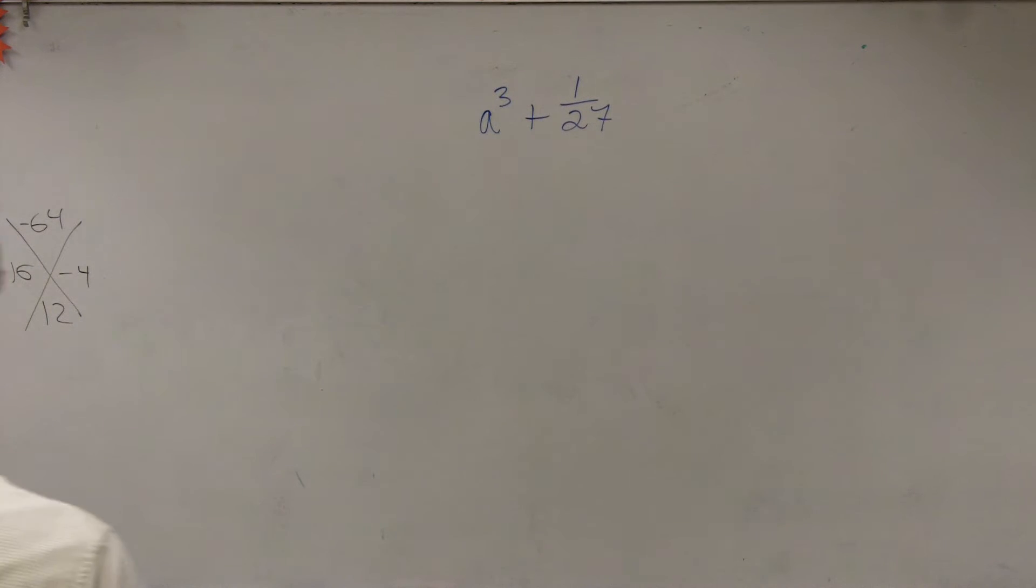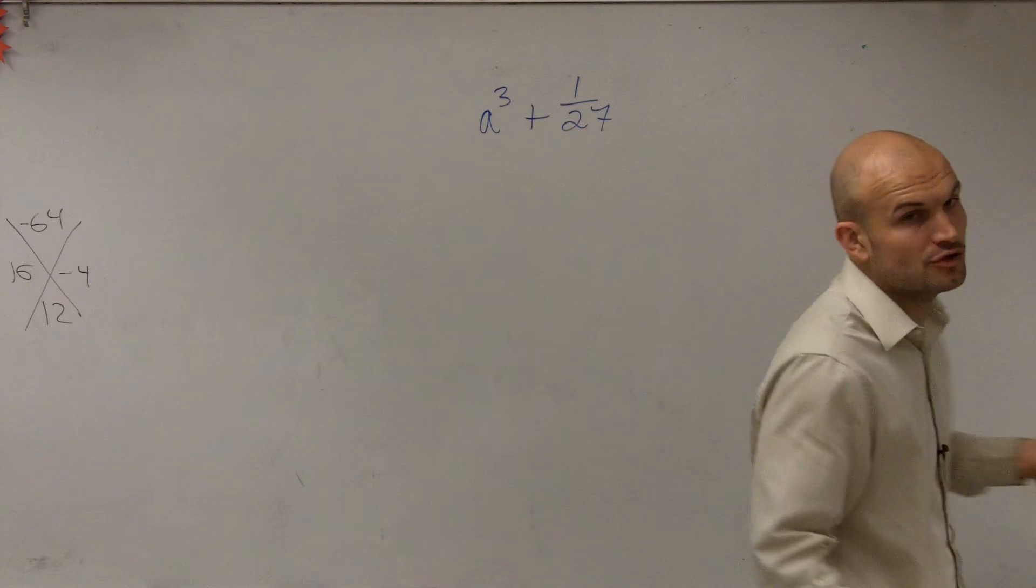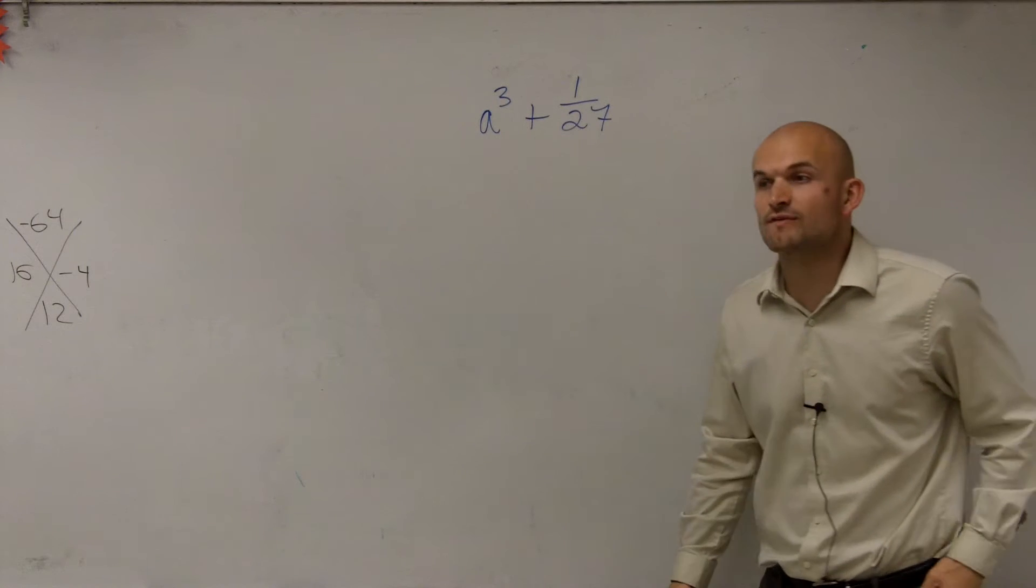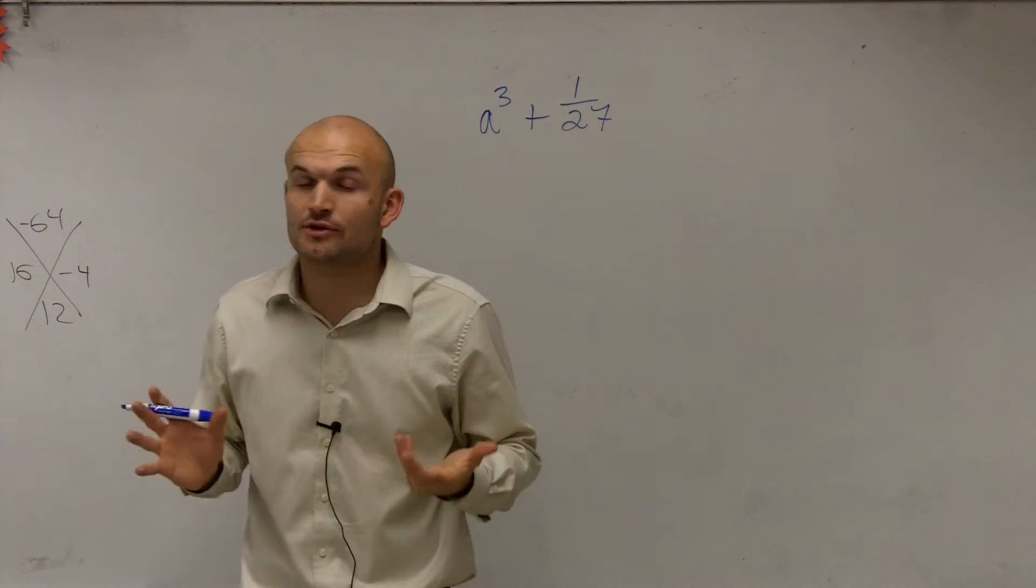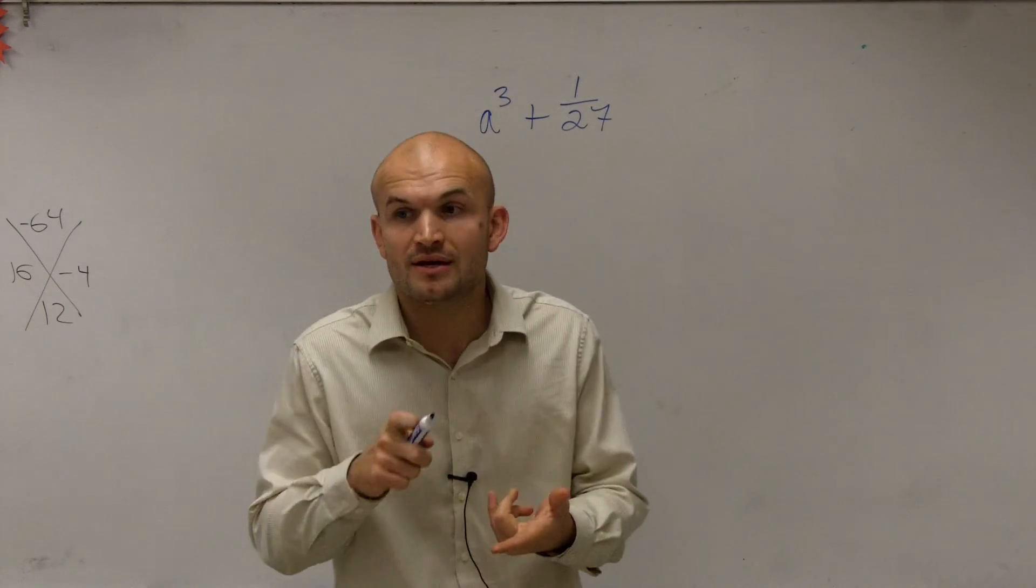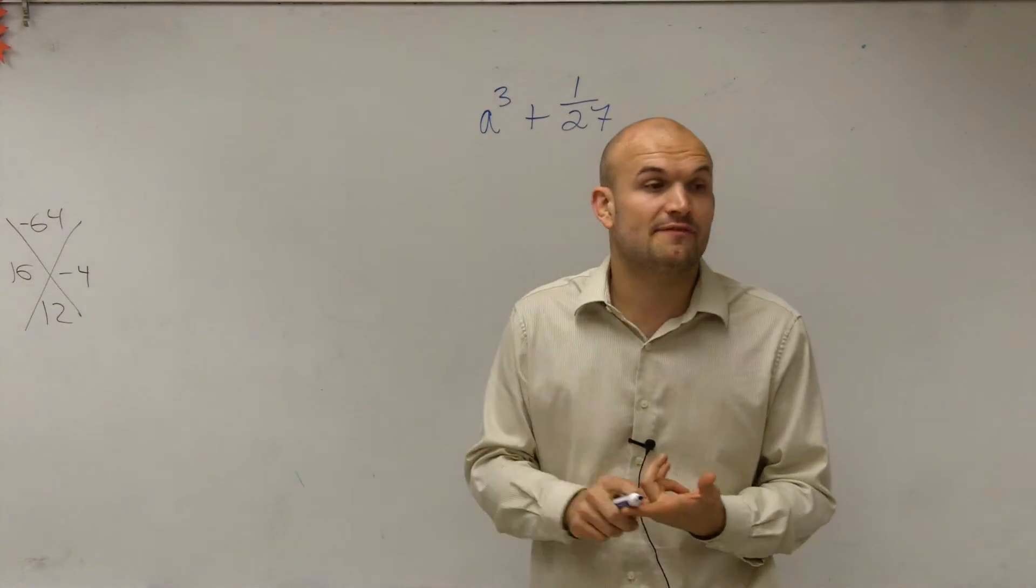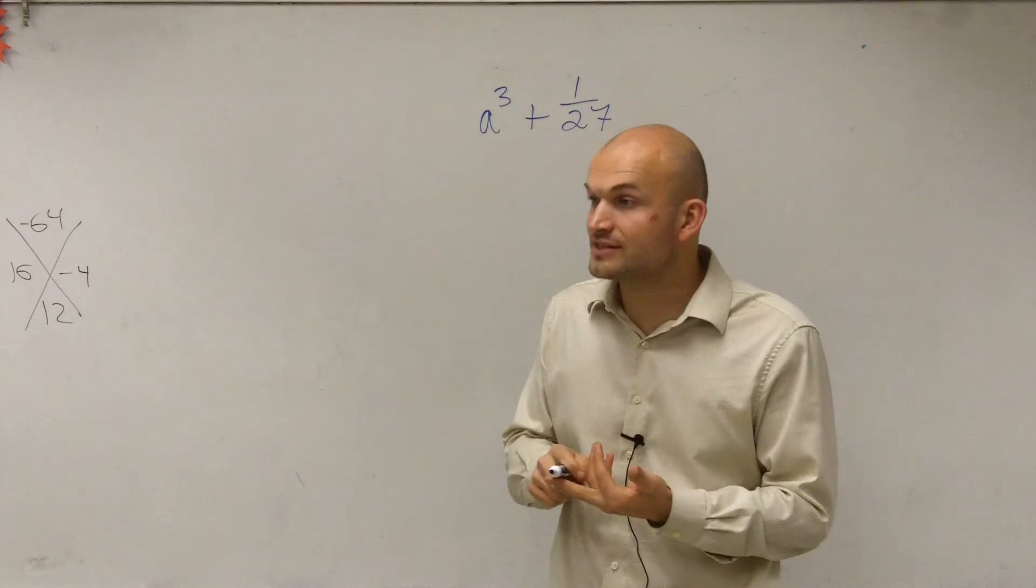What I have is the sum of two cubes: 8³ plus 1 over 27. When you have two different terms, there's only three factoring techniques we've talked about: the difference of cubes, the difference of squares, and the sum of cubes.